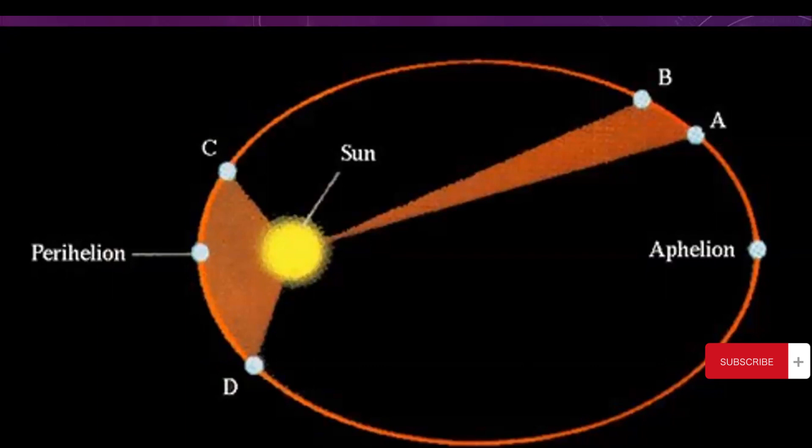Kepler's second law, also known as the law of equal areas, describes the relationship between the planet and the sun during its orbit. This law states that a planet sweeps an equal area in equal intervals of time as it moves along its elliptical path.